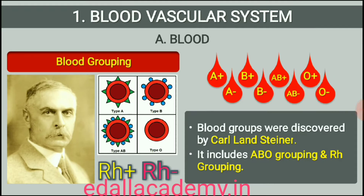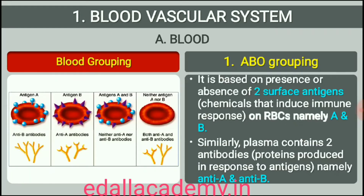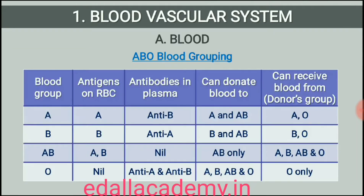Blood Groups. Blood of human beings differ in certain aspects though it appears to be similar. Various types of grouping of blood has been done. Two such groupings, the ABO and Rh, are widely used all over the world. ABO grouping is based on the presence or absence of two surface antigens, chemicals that can induce immune response, on the RBCs namely A and B. Similarly, the plasma of different individuals contain two natural antibodies, proteins produced in response to antigens. The distribution of antigens and antibodies in the four groups of blood, A, B, AB and O, is well established.